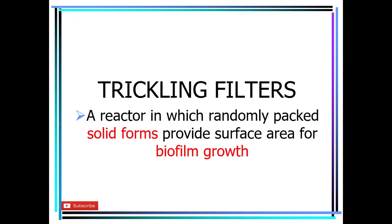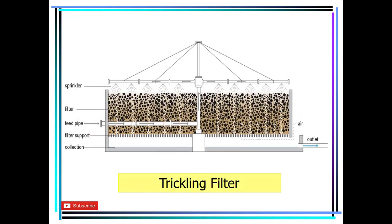Trickling filters are reactors in which randomly packed solid forms provide surface area for biofilm growth. Let's have a look at this diagram of the trickling filter, which consists of different parts.